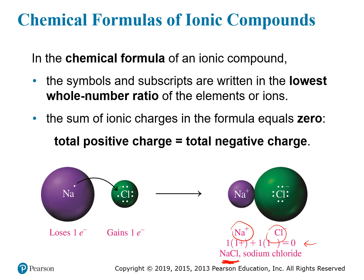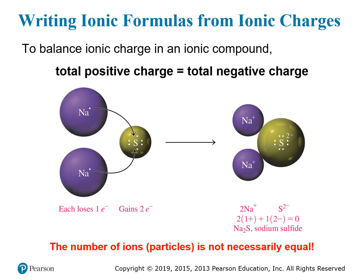The sum of ionic charges in the formula has to equal zero for a neutral ionic compound. The total positive charge equals the total negative charge. In this case, that gives you a simple one-to-one ratio between the actual ions themselves.